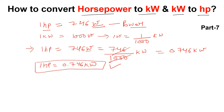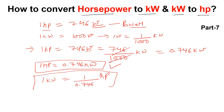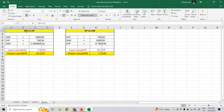The second conversion is kilowatt to horsepower, which is also very simple. If 1 horsepower equals 0.746 kilowatt, then 1 kilowatt equals 1 divided by 0.746. We can also derive this as: 1 kilowatt equals 1000 watts, and 1 horsepower equals 746 watts, so 1 kilowatt equals 1000 divided by 746, which gives 1.34 horsepower.